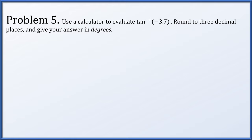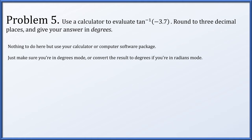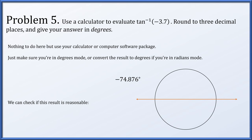Problem 5: use a calculator to evaluate arc tangent of negative 3.7, round to three decimal places, and give the answer in degrees. Just make sure you're in degrees mode. You'll end up with negative 74.876 degrees. We can check if this is reasonable: we're looking for an angle whose tangent is negative 3.7, meaning y equals negative 3.7 times x. The angle between plus or minus pi over two that this line gives is negative 74.876 degrees — something negative and closer to 90 degrees than to zero, which is plausible.